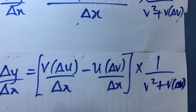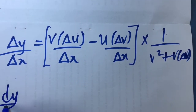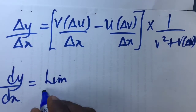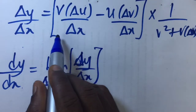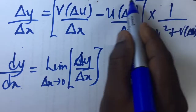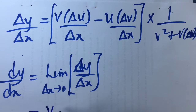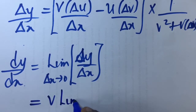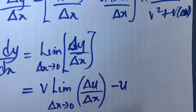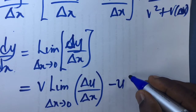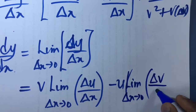Now I will begin step 3 and take the derivative dy/dx. We defined dy/dx to be the limiting value as delta x tends to 0 of delta y over delta x. Taking the limit of each term: v comes out as a constant, and we take the limit as delta x tends to 0 of delta u over delta x. Minus u comes out as a constant, and we take the limit as delta x tends to 0 of delta v over delta x.